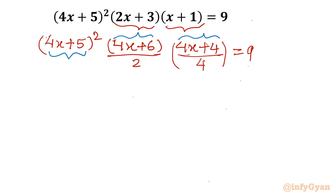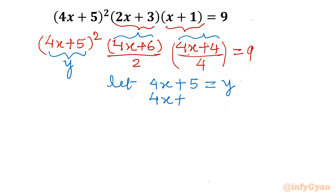We can take the middle term 4x+5 as the substitution. Let 4x+5 = y. From here, 4x+6 will be y+1 and 4x+4 will be y−1. Let us put these values into the given equation.